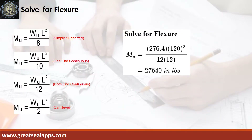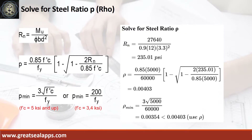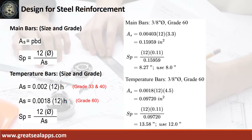Given factored load equals 276.4 pounds per square foot and L equals 10 feet, the maximum moment is 27,640 inch-pounds. Given maximum moment equals 27,640 inch-pounds, resistance factor equals 0.9, B equals 12 inches, and D equals 3.3 inches. The beam design ratio RN equals 235.01 PSI and reinforcement ratio rho equals 0.00403. The area of steel for main bars is 0.15959 square inch, and the spacing for 3/8-inch diameter bar is 8 inches.